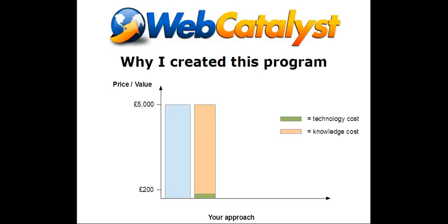If we could do this bit ourselves, we'd save all that money and we'd only have to buy the same technology that's costing the agency next to nothing. This is why I created this programme. In scenario one, the agency charges you all this money and you don't know how it breaks down. Now we know there's a tiny expenditure on technology and all the rest they're charging you for is the time and the knowledge. In scenario two, you still pay for the technology — a domain name, a bit of hosting — and you buy this programme, which costs a little bit but lets you build these kind of websites and save the difference.